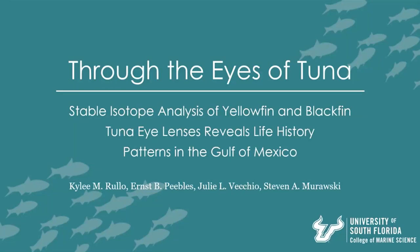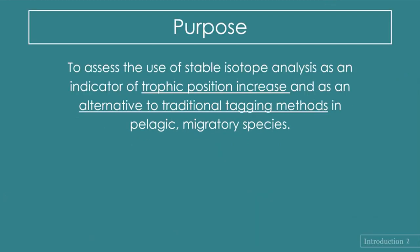Hi everyone, thank you for coming. I'm sorry if you came to my thesis defense — you're going to see some of the same work. My project is on stable isotope analysis of yellowfin and blackfin tuna in the Gulf of Mexico. The goal of this research was to assess the use of stable isotope analysis as an indicator of trophic position increase and as an alternative to traditional tagging methods to track a pelagic migratory species — in this case, yellowfin tuna and blackfin tuna.